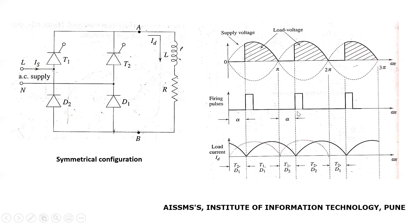At instant ωt = π + α, T2 and D2 start conducting and the load gets connected to the source through T2 and D2. Current starts flowing from the N terminal of the source through T2, load, D2, back towards the L terminal of the source. The direction of current through the load remains positive, producing a positive voltage across the load. The voltage appearing across the load during the negative half cycle is shown by the shaded waveform, and the load current starts gradually increasing from zero towards maximum magnitude.